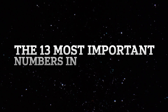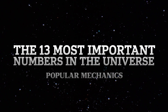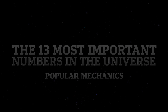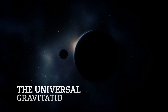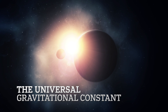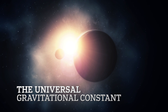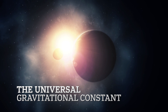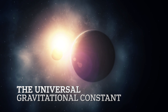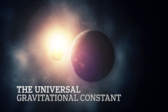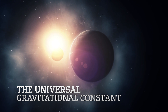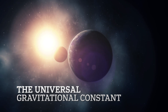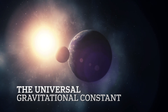The 13 Most Important Numbers in the Universe. Number 1: Newton's theory of universal gravitation was the first example of quantitative prediction. The gravitational constant, G, was the first constant to be discovered, yet it is the least accurately known of all 13 constants.